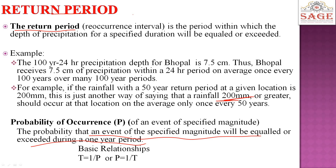The probability values range from 0 to 1, and the return period will be the reciprocal of the probability.